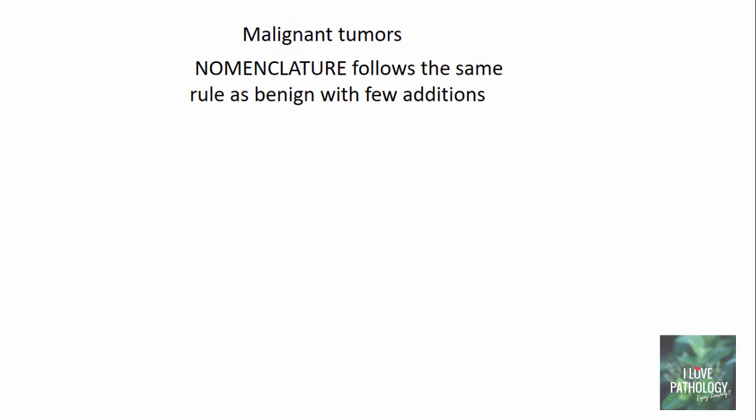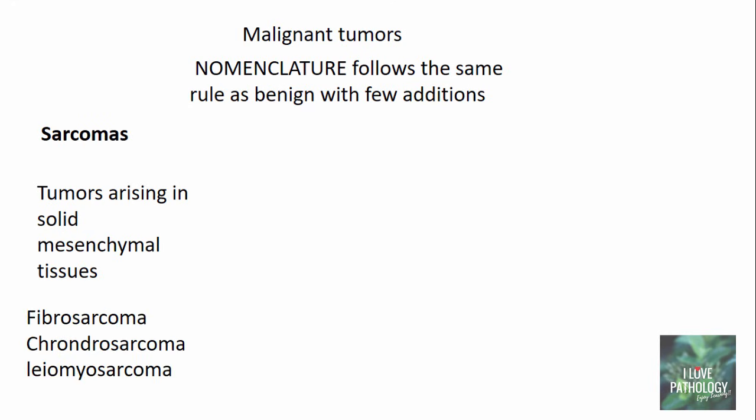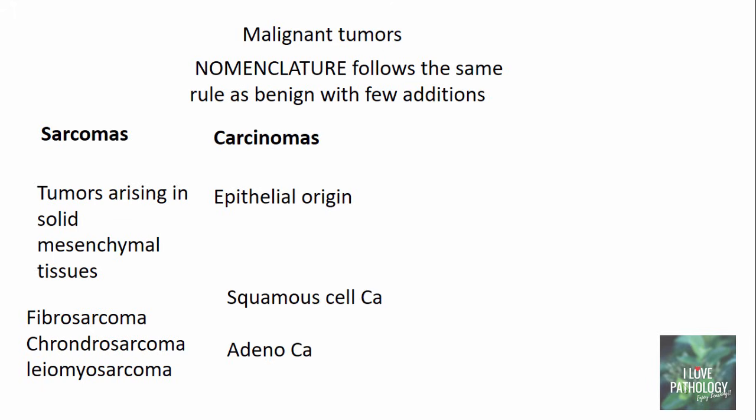Coming to malignant tumors, the nomenclature follows the same rule as benign but with a few additions. The word sarcoma is used to describe tumors arising from solid mesenchymal tissues. So fibroma (benign) becomes fibrosarcoma (malignant). Similarly, chondroma is a benign tumor of cartilage whereas chondrosarcoma is a malignant tumor of cartilage. Leiomyoma is a benign tumor of smooth muscle and leiomyosarcoma is a malignant tumor of smooth muscle. The word carcinoma is used to describe a malignant tumor of epithelial origin — for example, squamous cell carcinoma arises from squamous epithelium, whereas adenocarcinoma is a malignant tumor arising from glandular epithelium.